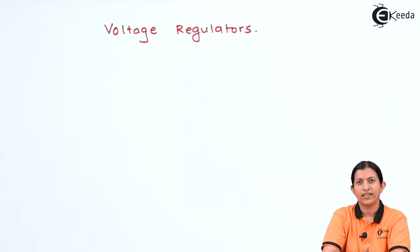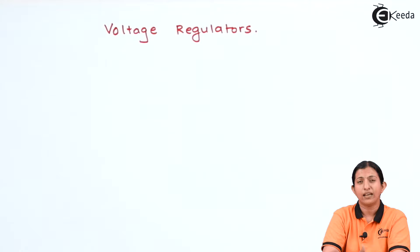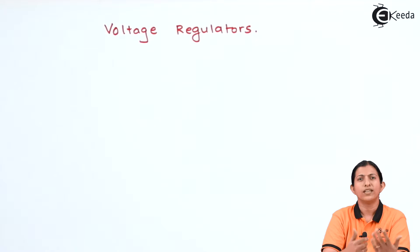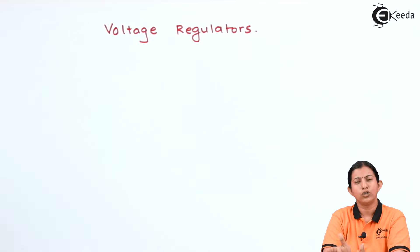All electronic devices require a DC supply. The DC supply can be provided with batteries or cells, but that is an expensive solution. So the usual procedure is that whatever AC is available is converted into DC supply.